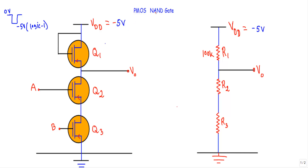As this will be a NAND gate, if at least one of the inputs is at logic zero, our output will be at logic one. The construction and logical operation of the PMOS NAND gate is quite similar to the NMOS NAND gate, except we will use P-Type Enhancement MOSFET to construct the logic circuit and we will use negative logic.